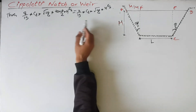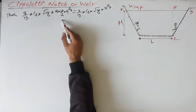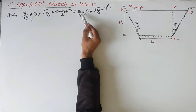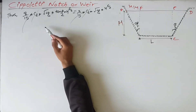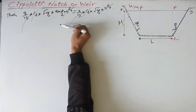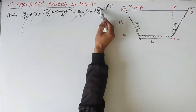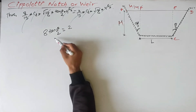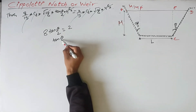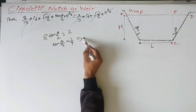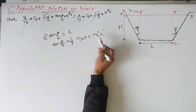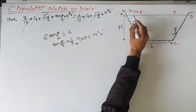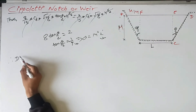From equating the two expressions, we can get the value of theta by 2. The CD terms cancel, and the H^(5/2) and root under 2g terms cancel, giving: 8 tan(θ/2) equals 2. This simplifies to tan(θ/2) equals 1/4, which implies theta equals 14 degrees 2 minutes. We arrive at the same result as before.